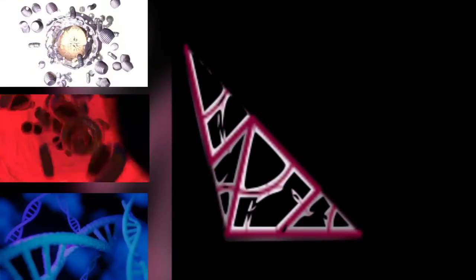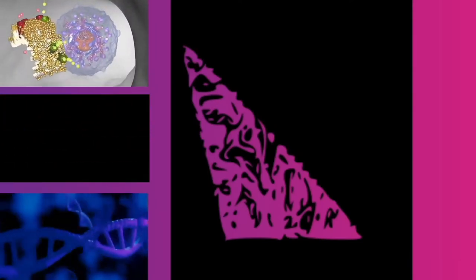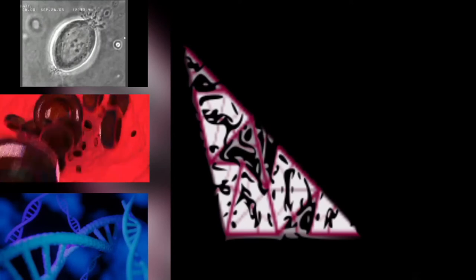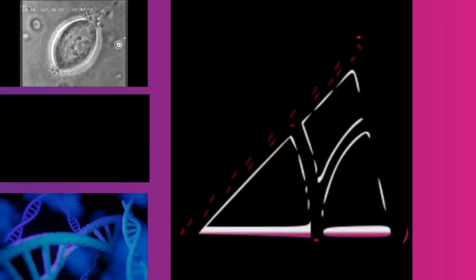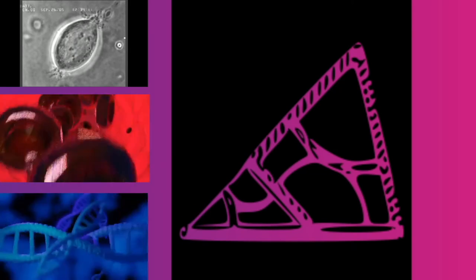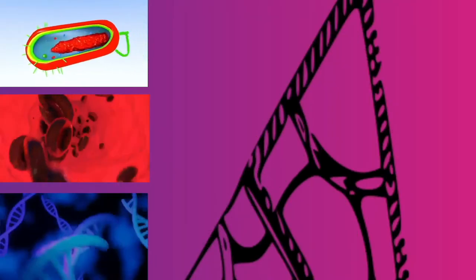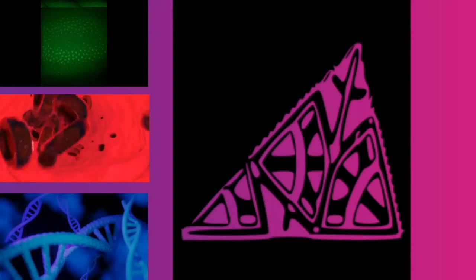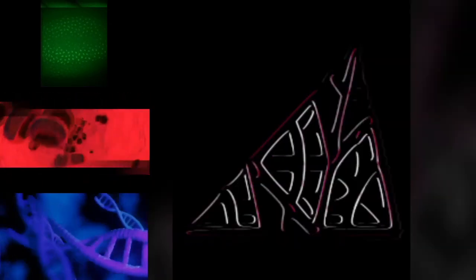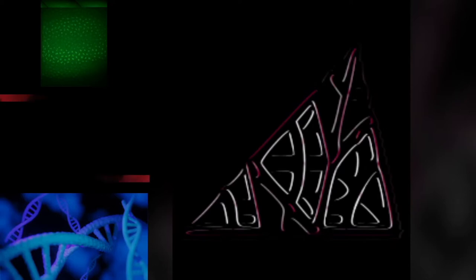Metaphase. After the microtubules have located and attached to the kinetochores in prometaphase, the two centrosomes begin pulling the chromosomes towards opposite ends of the cell. The resulting tension causes the chromosomes to align along the metaphase plate or equatorial plane, an imaginary line that is centrally located between the two centrosomes at approximately the midline of the cell. To ensure equitable distribution of chromosomes at the end of mitosis, the metaphase checkpoint guarantees that kinetochores are properly attached to the mitotic spindle, and that the chromosomes are aligned along the metaphase plate. If the cell successfully passes through the metaphase checkpoint, it proceeds to anaphase.